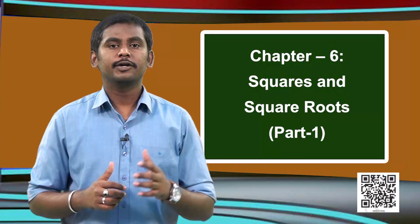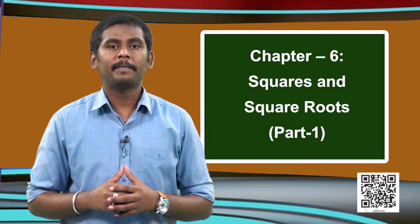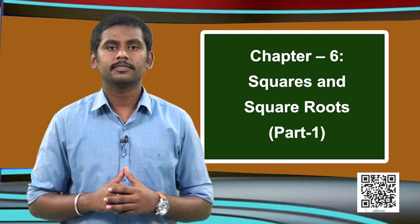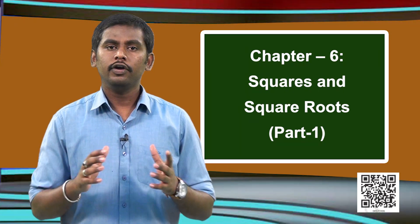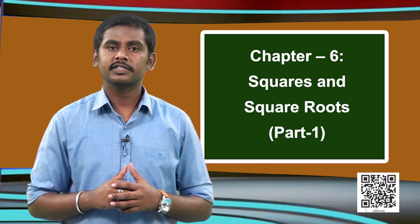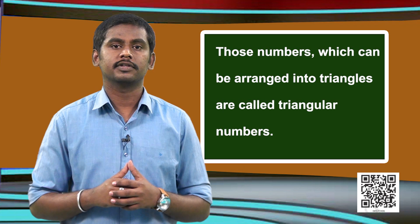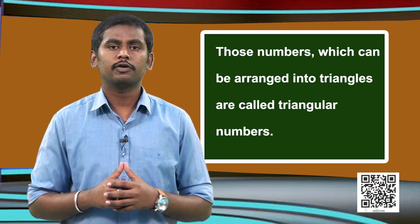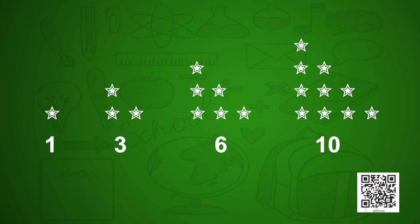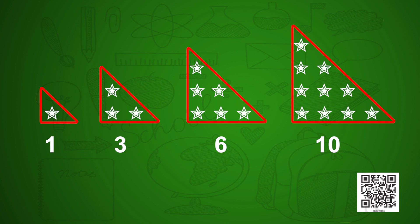Now let us observe some very interesting patterns related to square numbers. We all know what triangular numbers are — those numbers which can be arranged into triangles are called triangular numbers. Examples include 1, 3, 6, 10, which can all be arranged in the shape of a triangle.